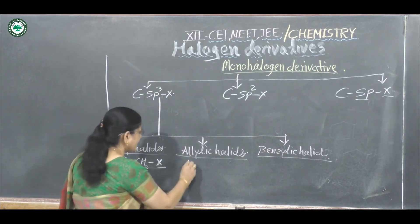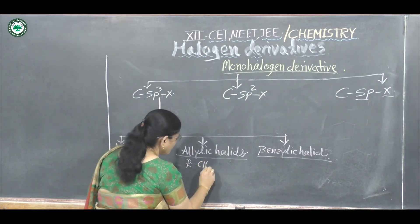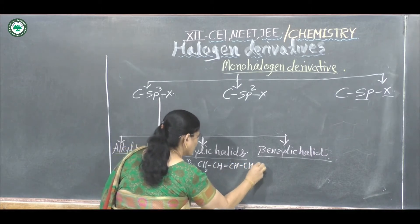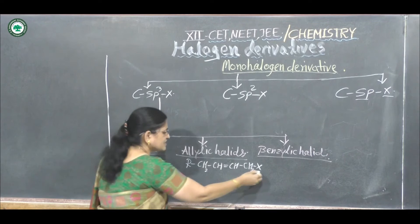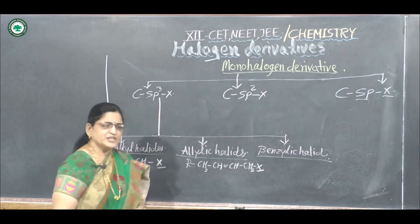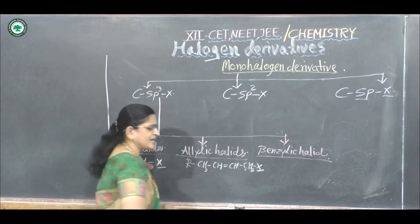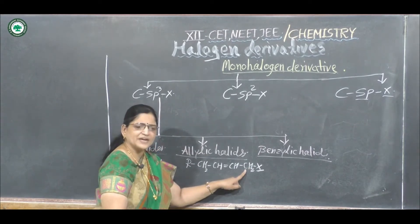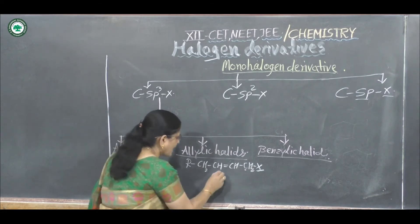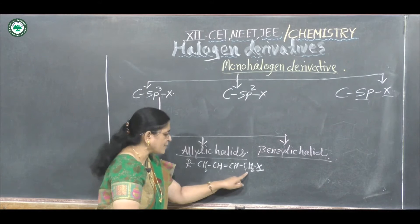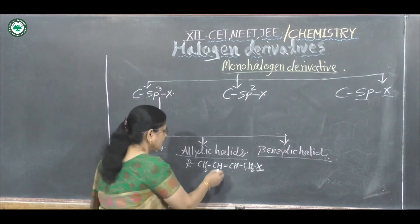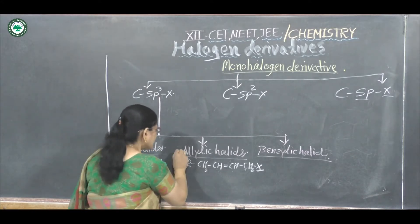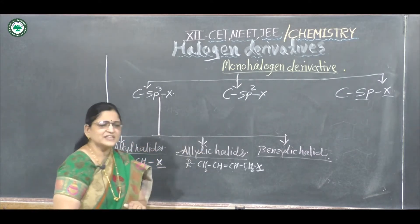Allylic halides have the structure RCH2-CH=CH-CH2X. In this compound, the halogen atom is bonded to an sp3 type of hybridized carbon atom, but that carbon is next to a carbon-carbon double bond. Such compounds carrying a carbon-carbon double bond adjacent to the sp3 carbon are called allylic halides.